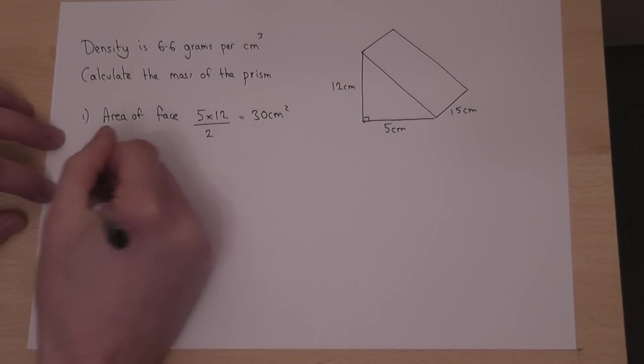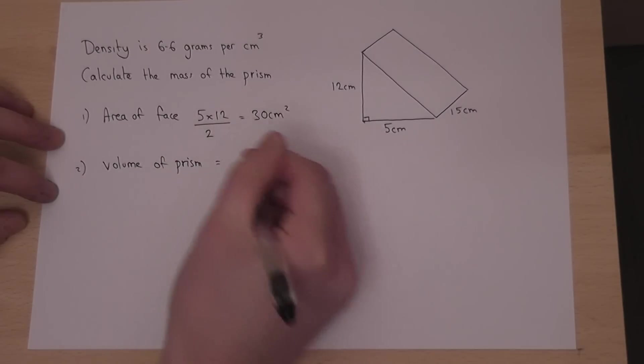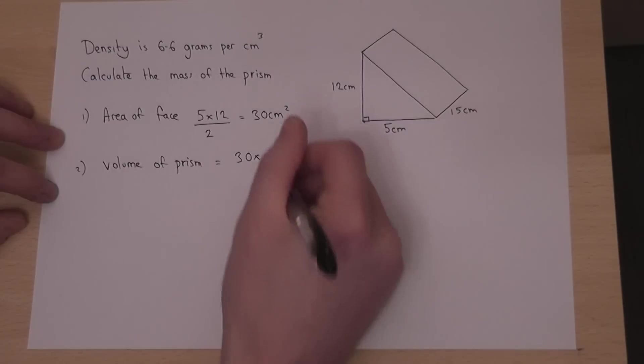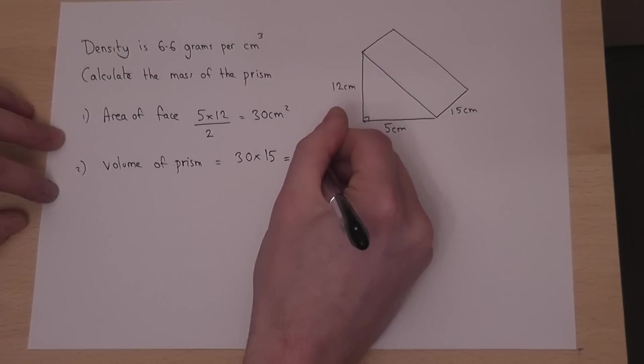So the volume of the prism is this area, which is 30, times by the depth of the shape, which is 15. So therefore the volume is 450 centimetres cubed.